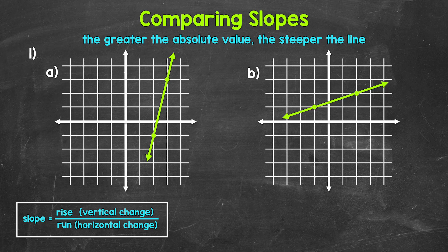Simply put, the greater the absolute value of the slope, the steeper the line. In other words, the further the slope is from zero, the steeper the line. You may be thinking: why does it have to be the absolute value of the slope? Why can't we just look at which slope is greater? That's a great question, and it has to do with negatives, which we will take a look at in number two.